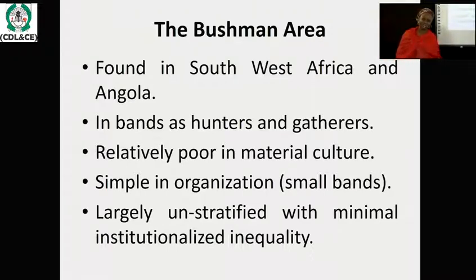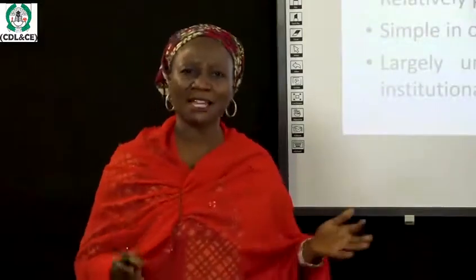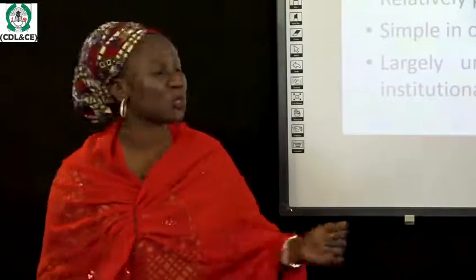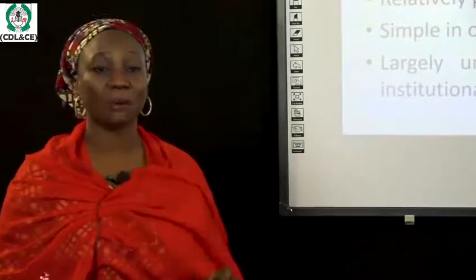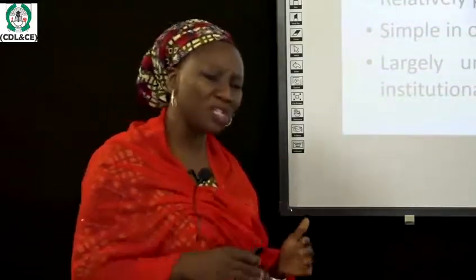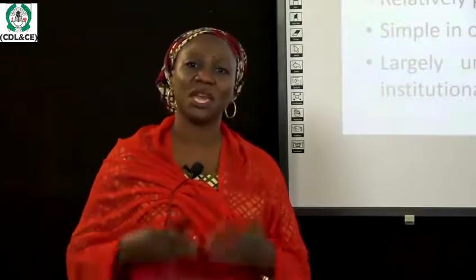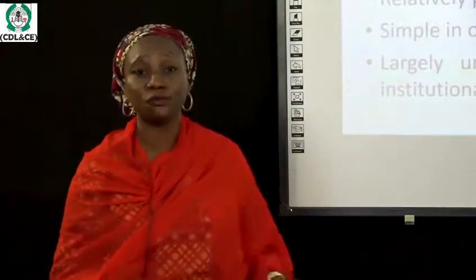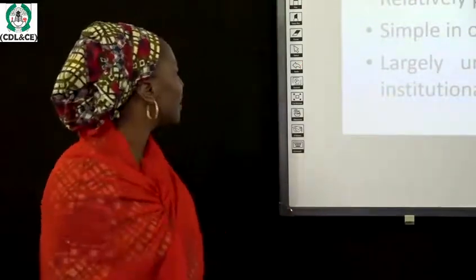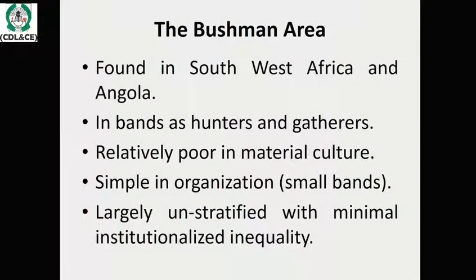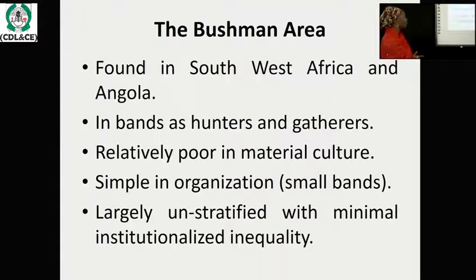They are relatively poor in material culture. Because they don't deal with animals, don't cultivate lands, and don't domesticate, they lack material resources. Accumulating material is also a problem because they are always on the move, going from one area to another in search of food. They have a simple social organization based on the band society and are largely unstratified — there is no form of hierarchy.